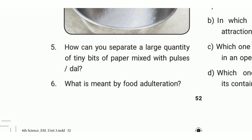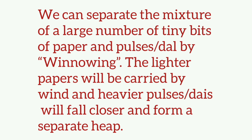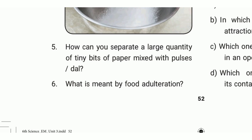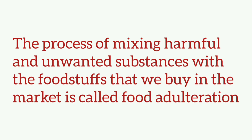Fifth one: how can you separate a large quantity of tiny bits of paper mixed with pulses? The answer: we can separate the mixture of tiny bits of paper and pulses by winnowing. The lighter papers will be carried by wind and the heavier pulses will fall closer and form a separate heap. Sixth one: what is meant by food adulteration? The answer: the process of mixing harmful and unwanted substances with the foodstuffs that we buy in the market is called food adulteration.